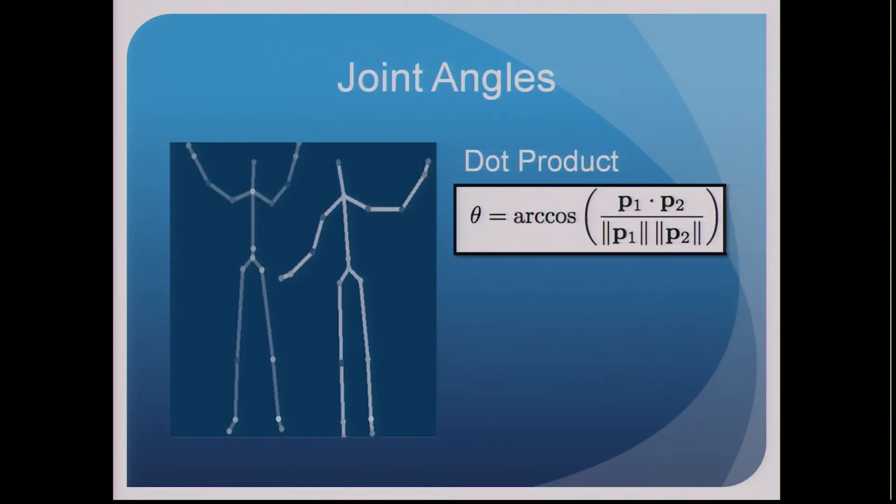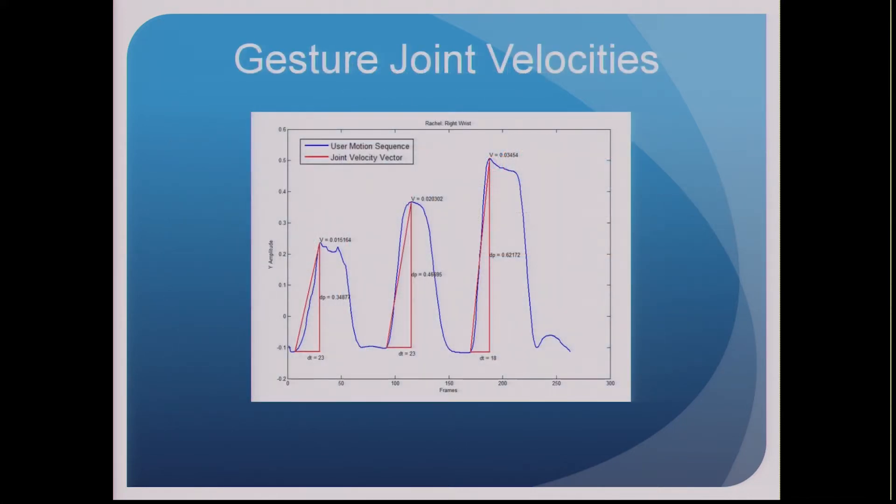And so the next topic on our agenda is to actually calculate the user accuracy, and we do so in two ways. The first is we can use the inner product or the dot product to calculate the angles between the joints of interest. We can also calculate the gesture joint velocity.